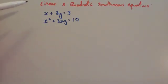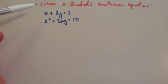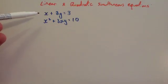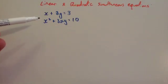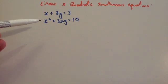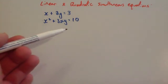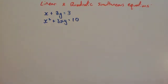In this video we're going to look at how to solve simultaneous equations whenever one of the equations is linear and one of them is a quadratic. So here's the linear one: x plus 2y equals 3, and here's the quadratic one: x squared plus 3xy equals 10.